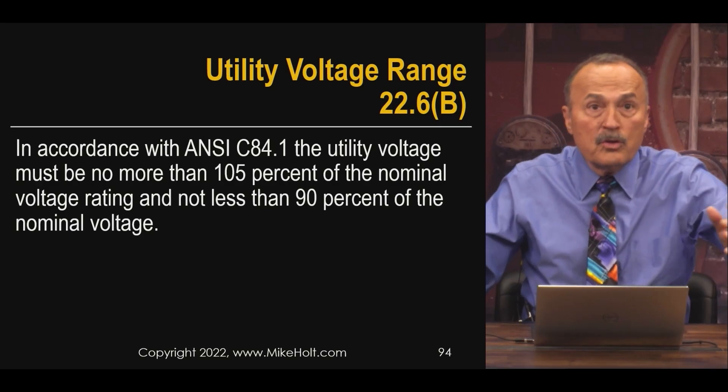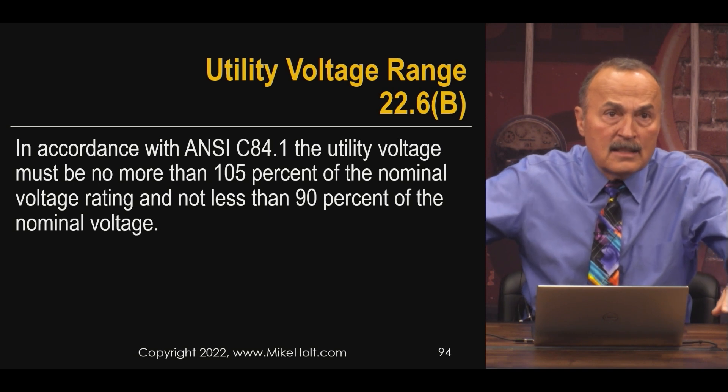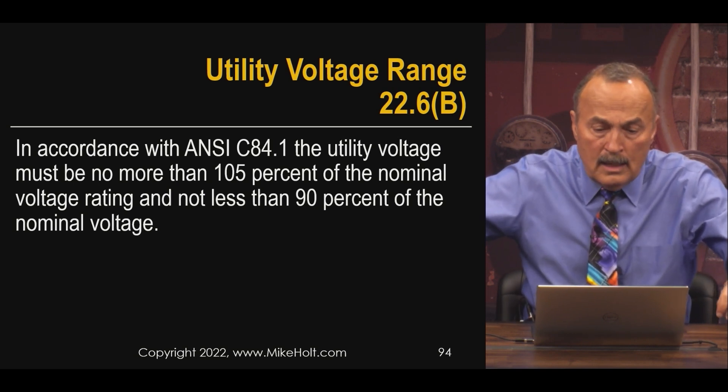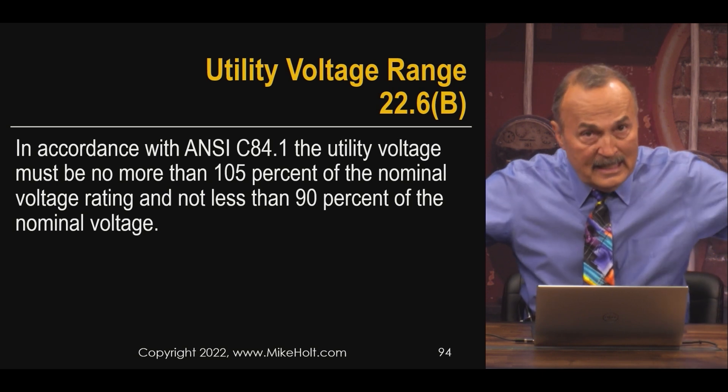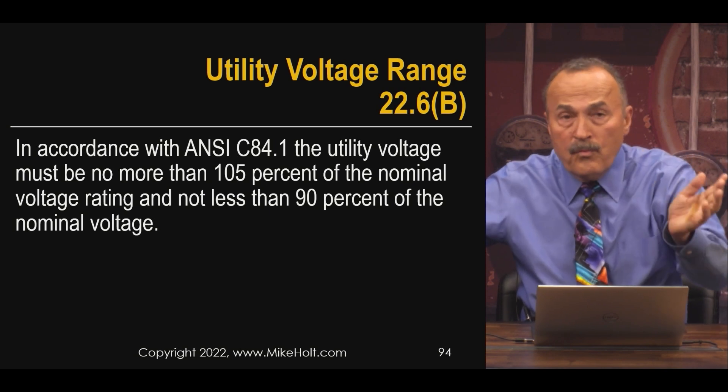So when you hear somebody talking about 110, and houses at 110, maybe 115 — I'm sure there are transformers out there giving you 115 — and 120 is because it's the history of voltages. Today, nominal system voltage is 120/240. There's an ANSI standard for utilities: according to ANSI C84.1, column A in the table, the utility voltage must not be more than 105% of the nominal system voltage.